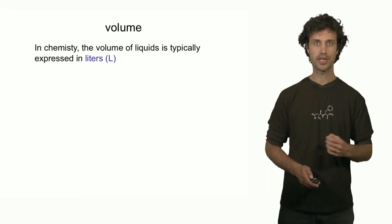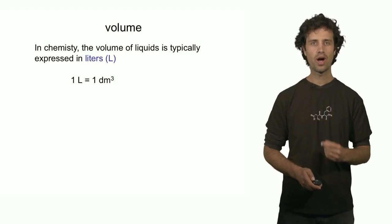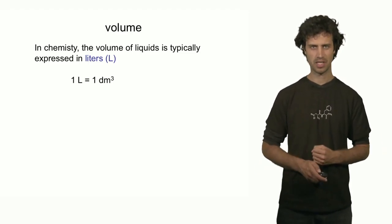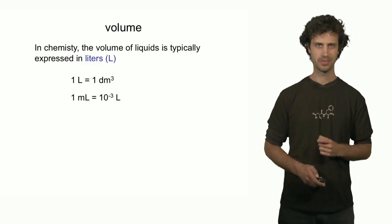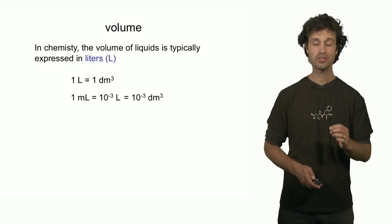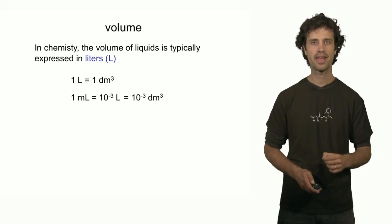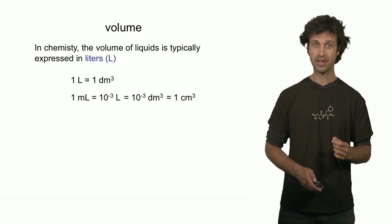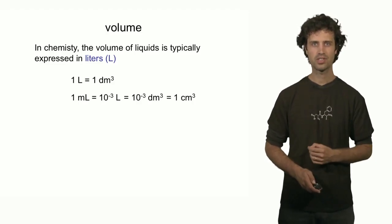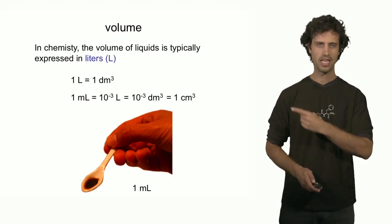How small is a centimeter cubed approximately? A centimeter cubed corresponds to the size of a single sugar cube. In chemistry, we often deal with liquids and liquid solutions, so we use the liter. One liter equals 1 decimeter cubed — approximately the volume of water in a standard bottle. Another very useful unit is the milliliter, which is one thousandth of a liter, or 10 to the minus 3 liters. That corresponds to 1 centimeter cubed. One milliliter corresponds approximately to the amount of cough syrup in a quarter teaspoon.